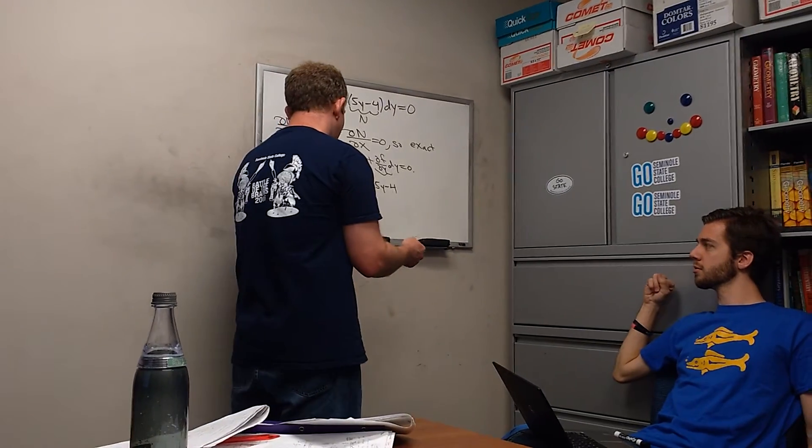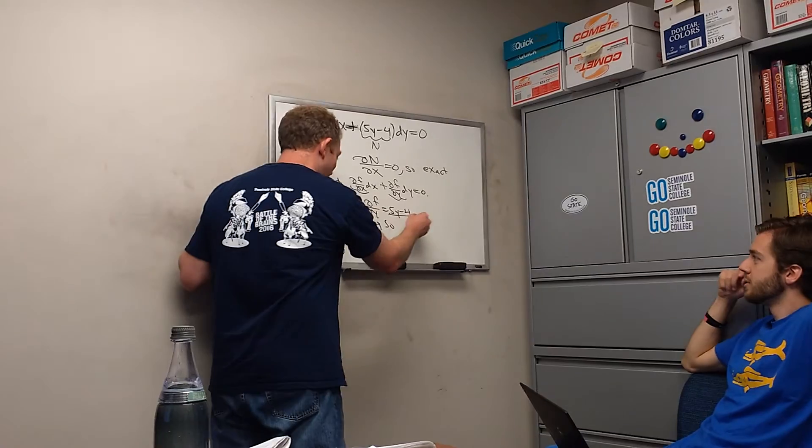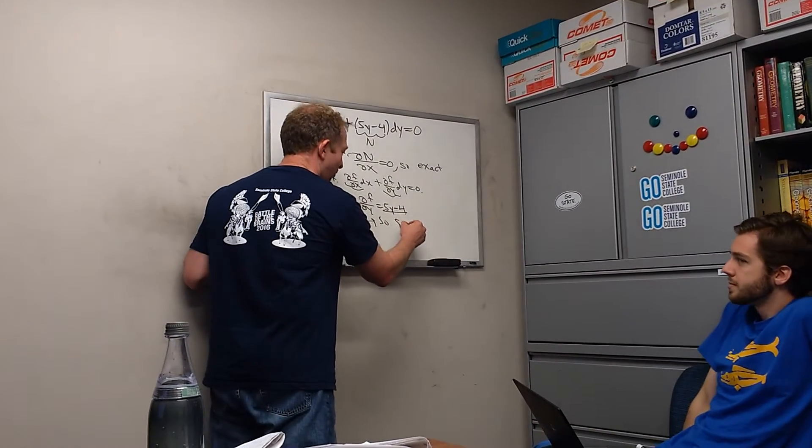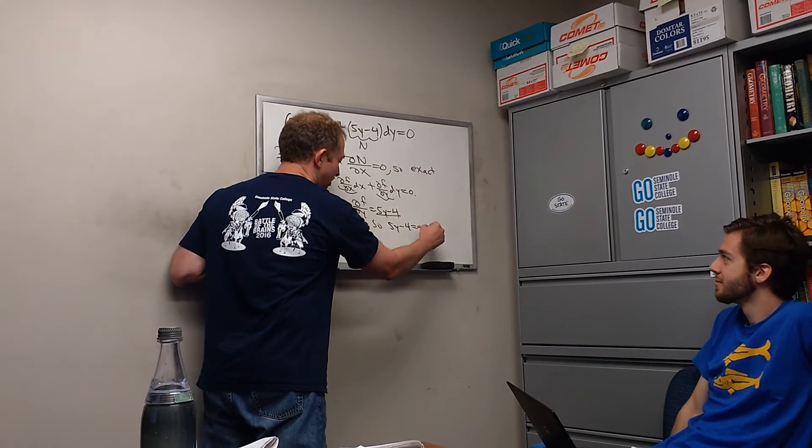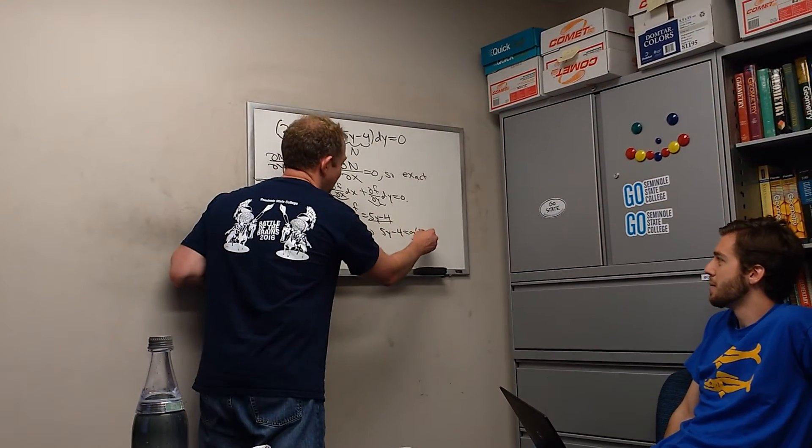Okay. If that's not clear, so you work it out. And then you say, okay, so del f del y is this. Del f del y is this. Right? They're both the same. So 5y minus 4 is equal to g prime of y. G prime of y, yes.